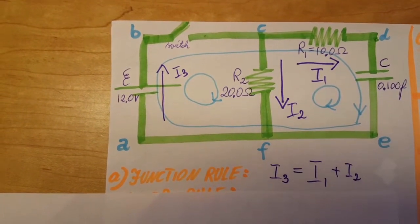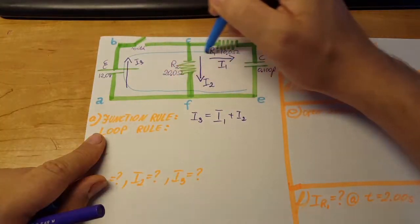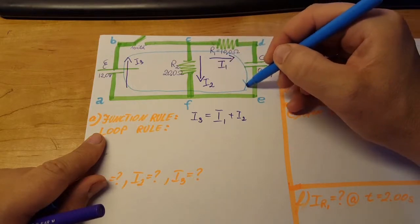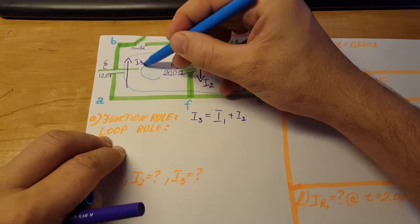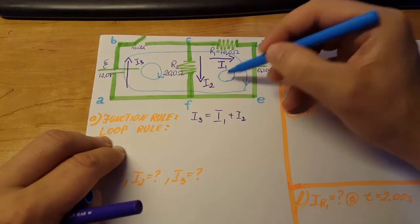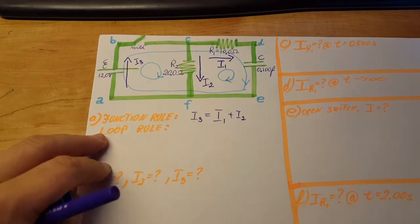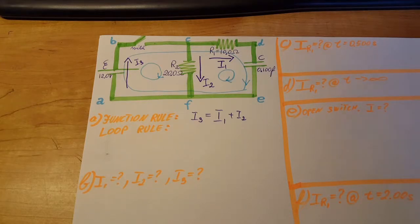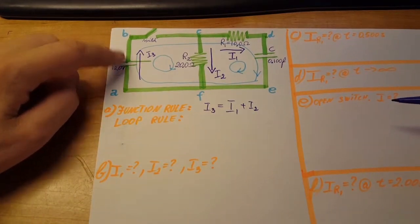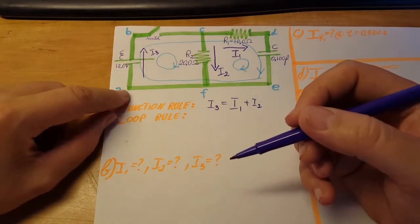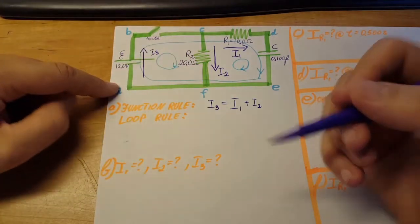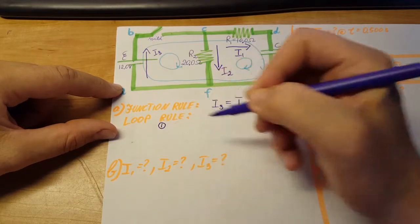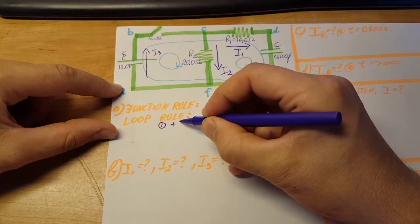Now let's do the loop rules. We can use the left side loop and the right side loop separately, both going clockwise. We have three loops available. For the outer loop, we start at point A and go A, B, C, D, E, F and back to A. We'll call this equation one, and we begin with plus EMF.